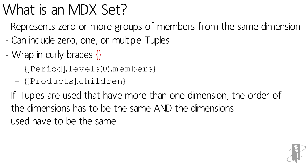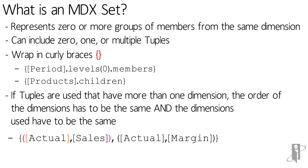If tuples are used that have more than one dimension, the order of the dimensions has to be the same, and the dimensions used have to be the same. For example, I have (Actual, Sales) and (Actual, Margin) — two different tuples joining into my set. I can't add a third one that would be (Actual, Sales) or (Actual, Colas), but I could add (Actual, COGS) as a third tuple, or a fourth, fifth, or sixth.